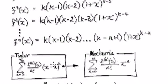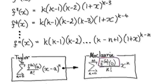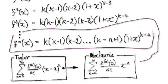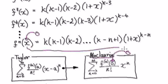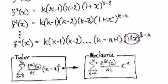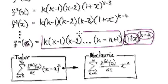Looking at the Maclaurin series, we need to find the nth derivative and evaluate it at 0. We have the general nth derivative expression. When it comes to the Maclaurin series, we always evaluate at 0, so we put x = 0. Putting 0 into x means 1 plus 0 inside the bracket, so the whole bracket becomes 1. And 1 to any power is 1. So the nth derivative evaluated at 0 is simply the coefficient part — this whole bracket becomes 1, leaving just that factor.